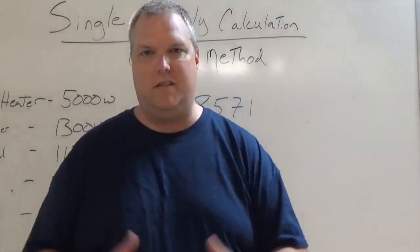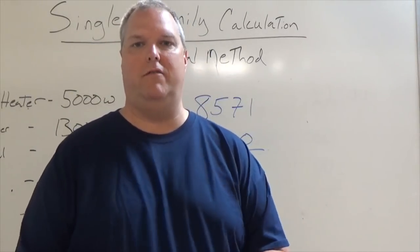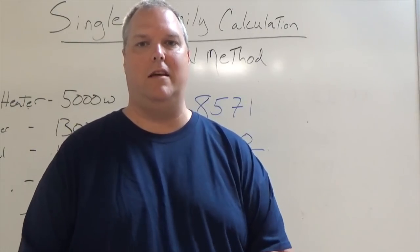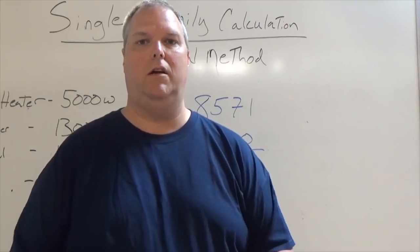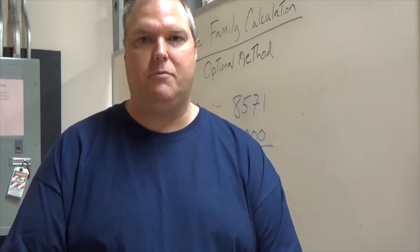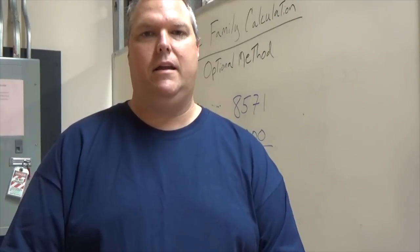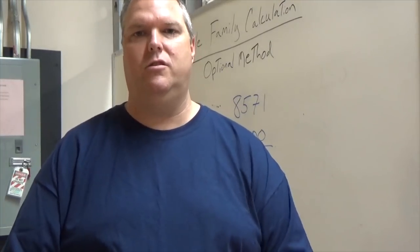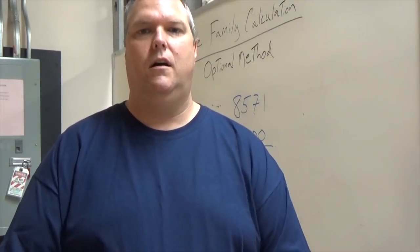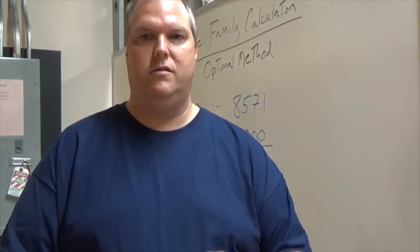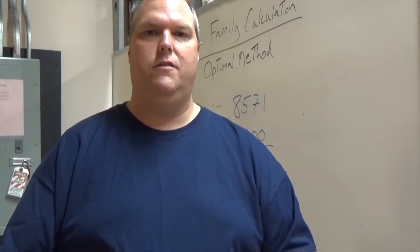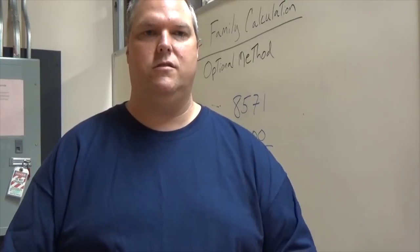We still have a few more steps to go, but that's what I want to cover today. This is the first step in calculating the optional method for a single-family dwelling — a basic calculation you have to remember, and it's all found in your codebook. Just follow the methods. The codebook tells you exactly what percentages to take, and erring on the higher side is never a bad thing.